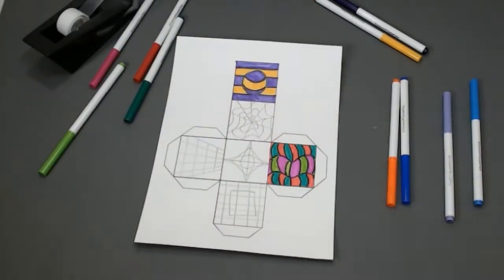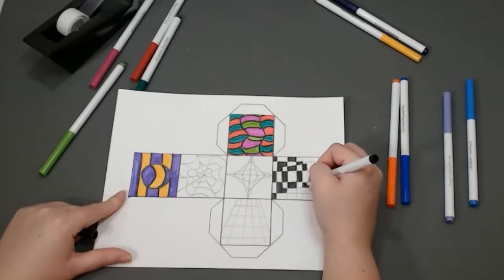Warm colors are red, yellow, and orange. Cool colors are blue, purple, and green.